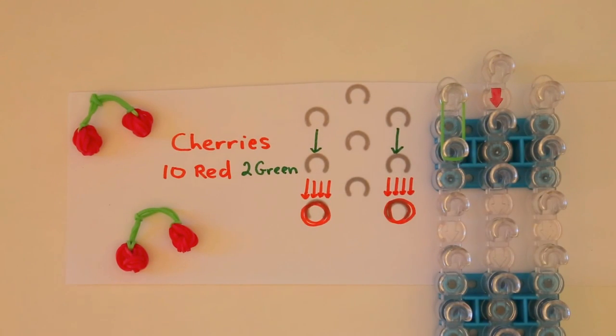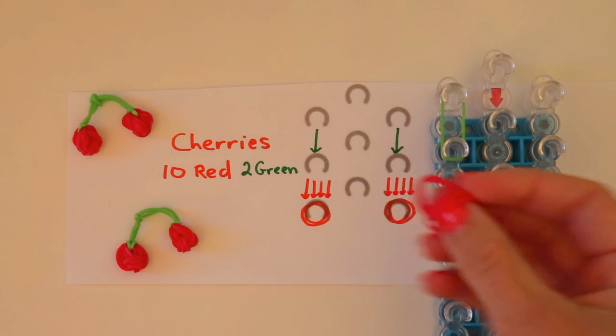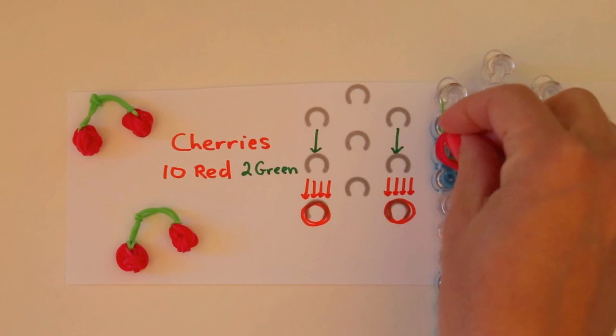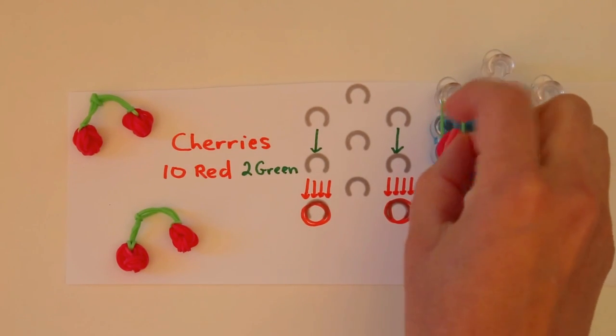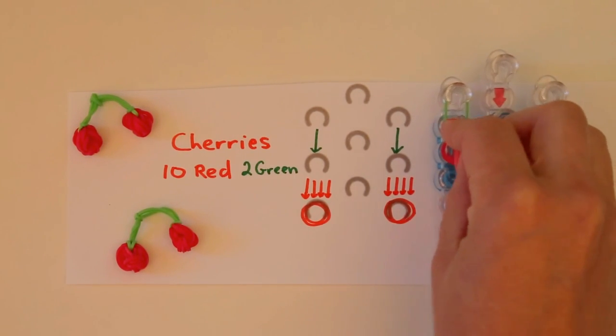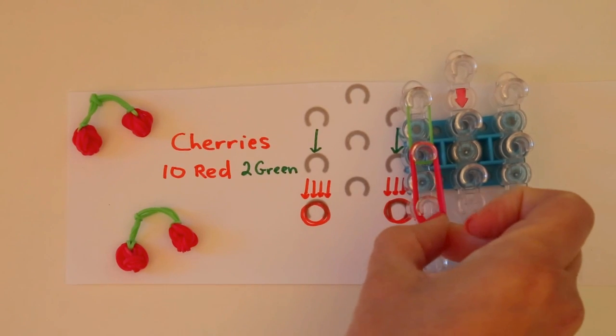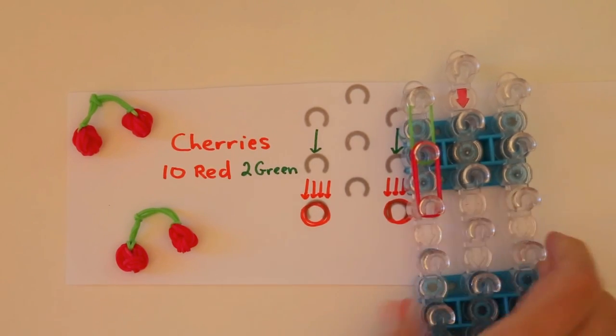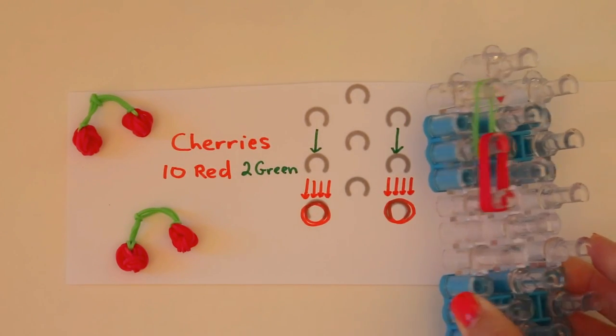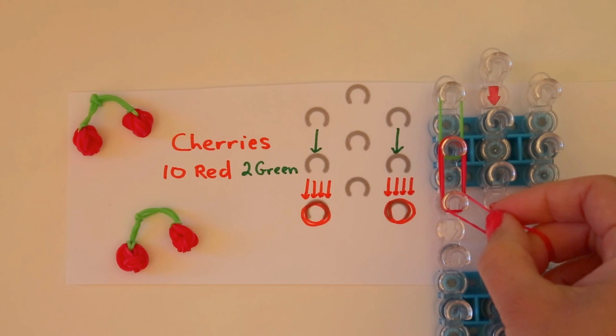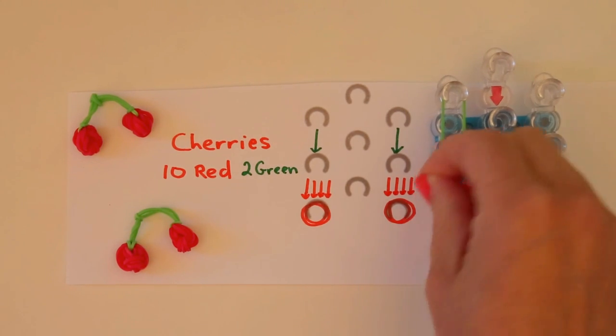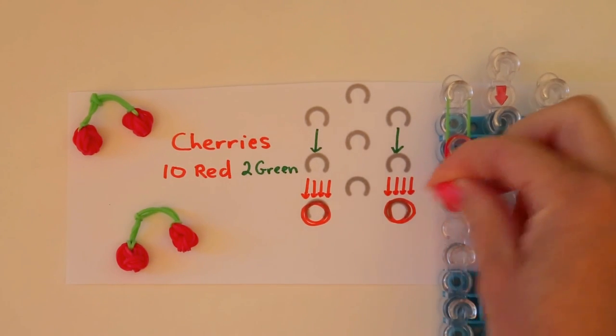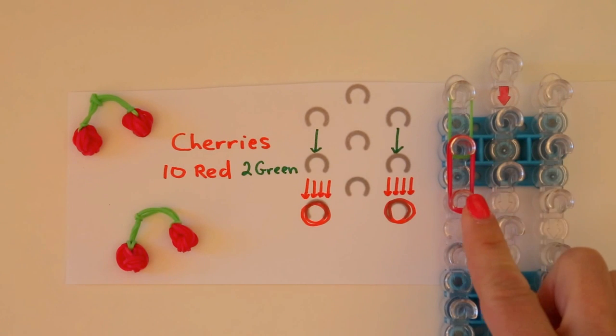Then for the next position you'll need four red rubber bands that are gonna all go straight like that. And then a single red rubber band is wrapped three times around the bottom peg here.